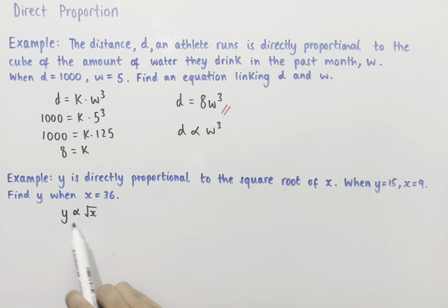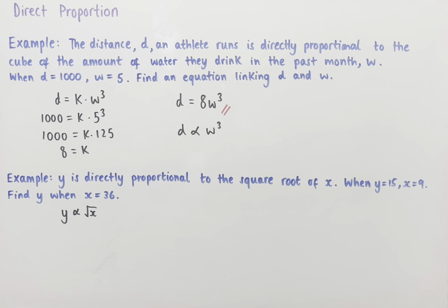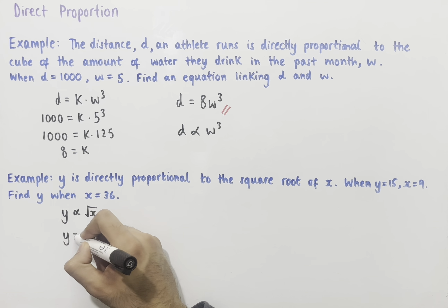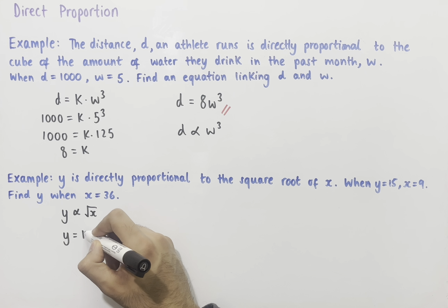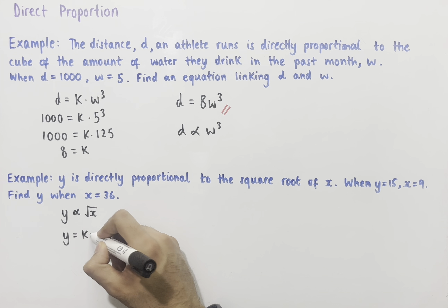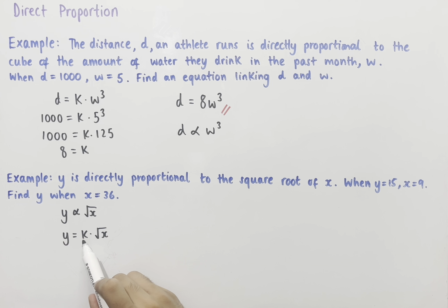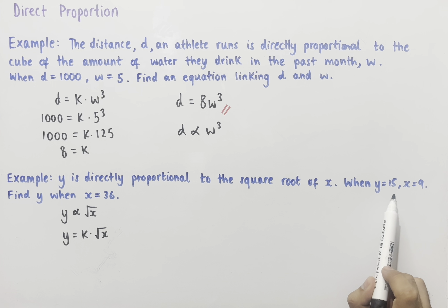Since these two variables are proportional to each other, we can set up an equation: y equals k multiplied by the square root of x, where k is called the constant of proportionality. Since we're told that when y equals 15, x equals 9, we can now substitute this in.